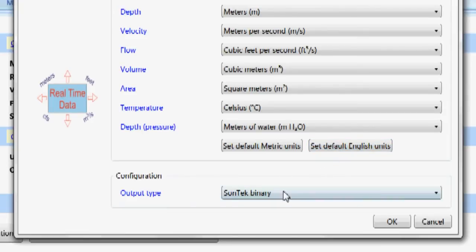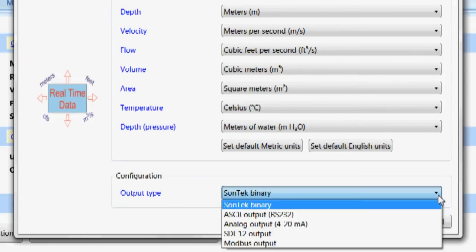The next thing is the output type. These are for units and this is for the output type. I have a couple options. I can, when I output it to Sontek binary, that's telling it I'm just going to be storing data on the IQ.